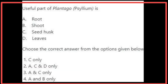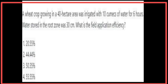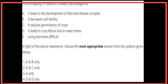The useful part of Plantago psyllium is seed husk — that is, C only. Monocropping of tobacco is always discouraged as it leads to the development of pest and disease complex and it decreases soil fertility. The answer is A and B only.